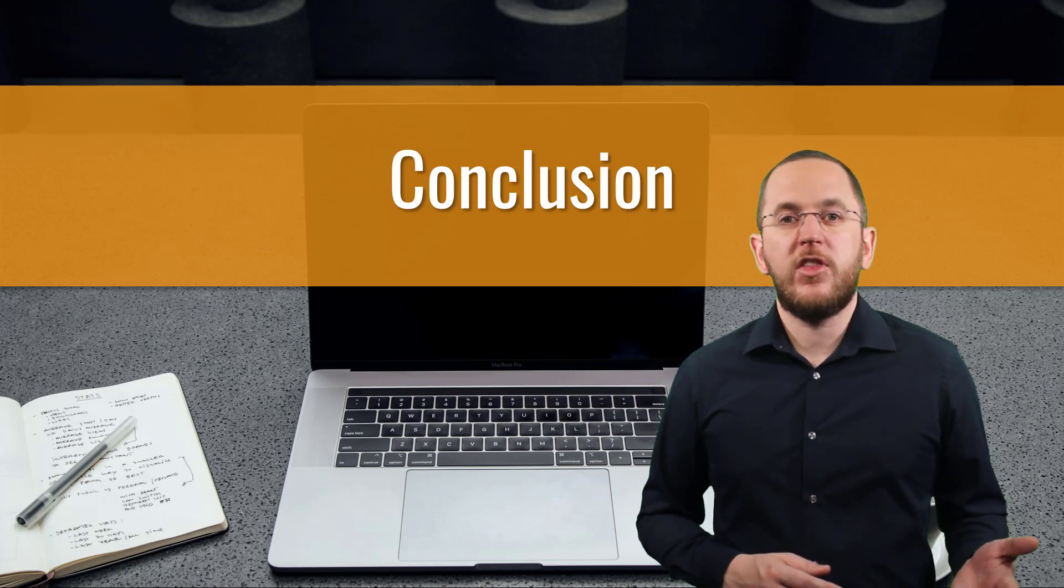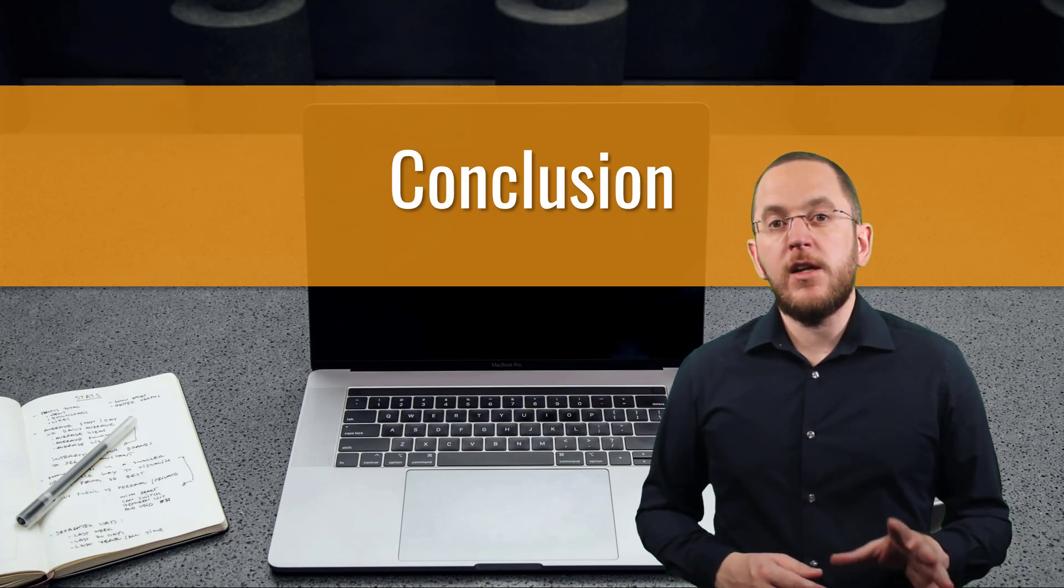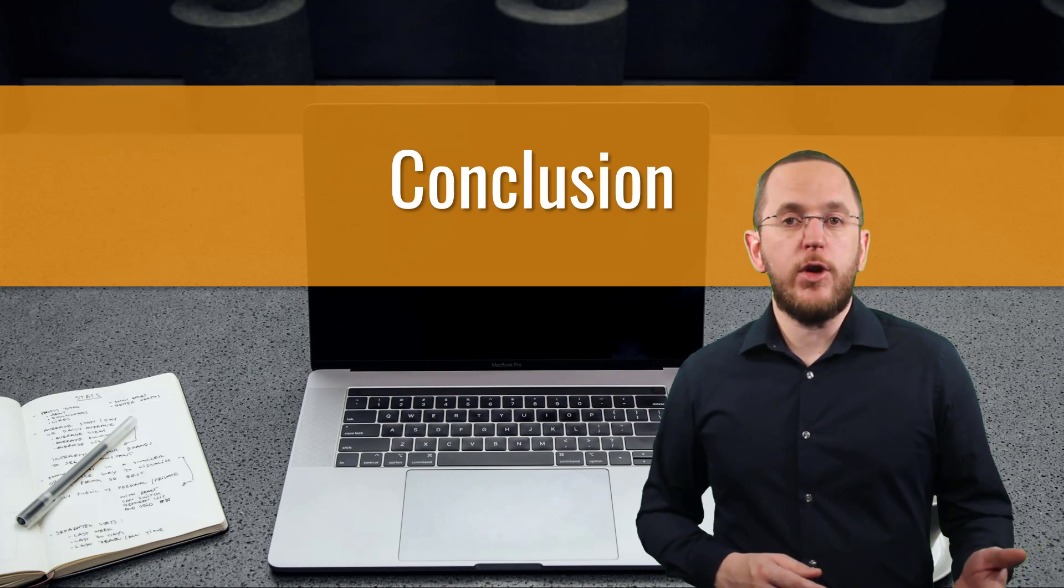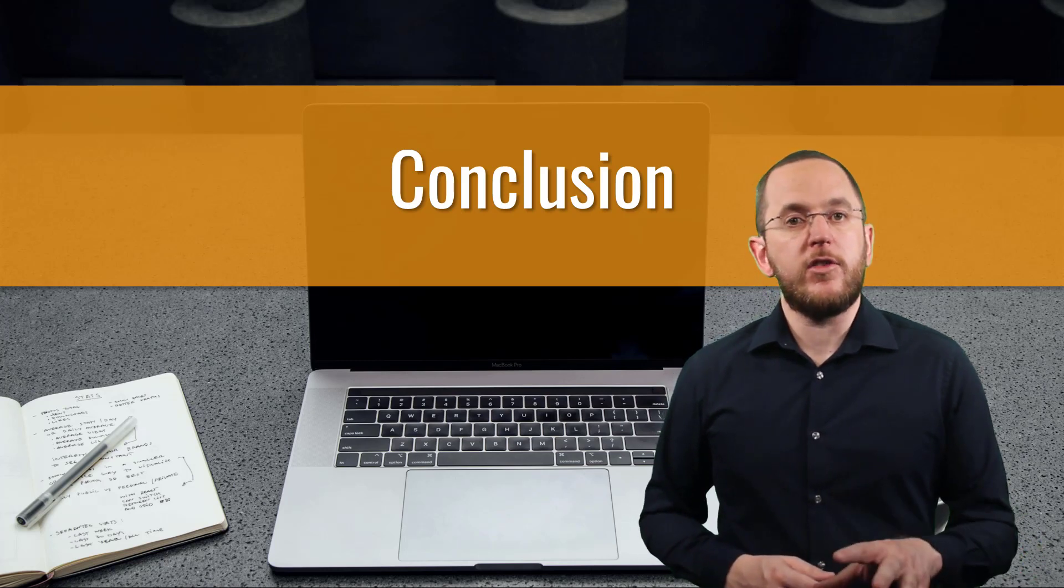In case your entity doesn't have a version attribute, Spring Data JPA checks the primary key attribute. If the primary key is null, it persists the object as a new entity. Otherwise, it tries updating an existing record.